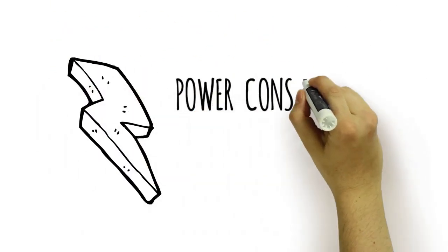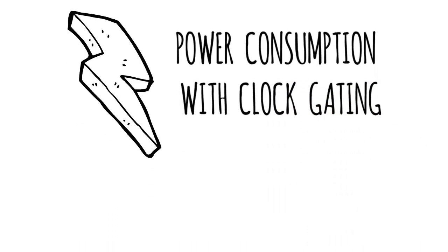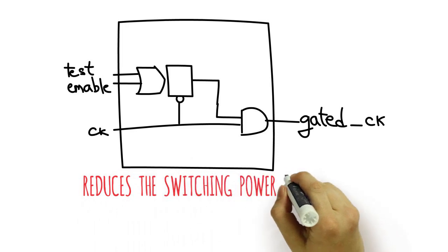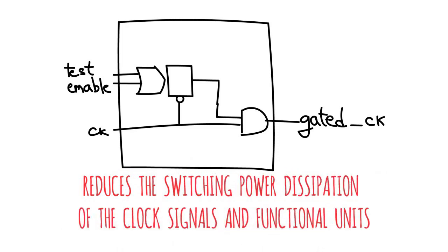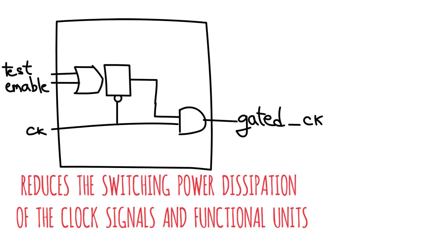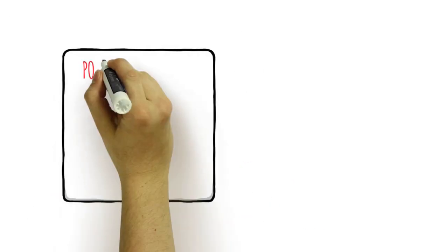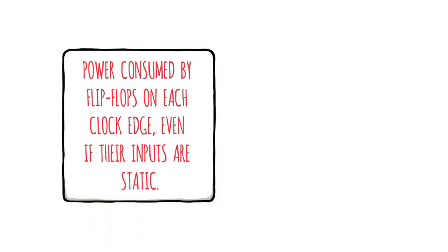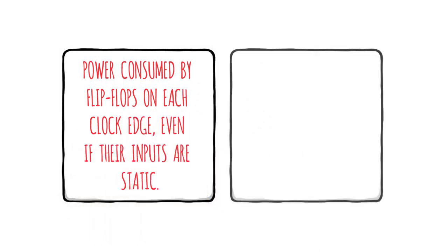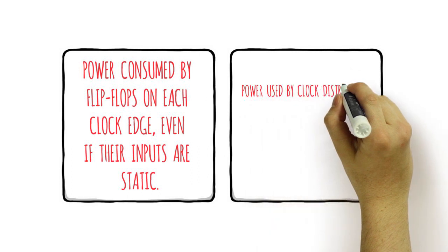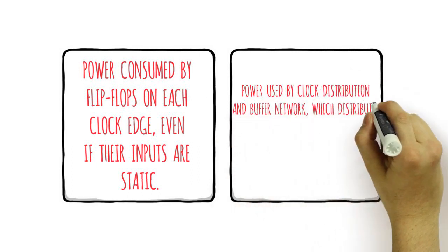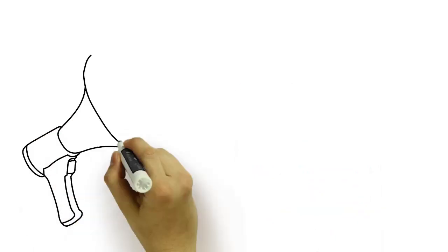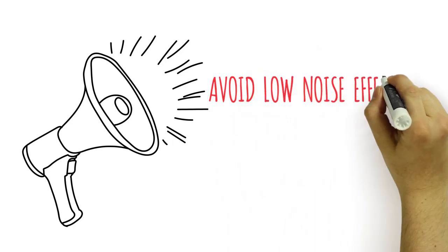Here is how clock tree synthesis helps. Firstly, it reduces power consumption with clock gating. During the CTS step, clock gating is a technique that reduces the switching power dissipation of the clock signals and functional units. It helps in two major components of power dissipation: one, power consumed by flip-flops on each clock edge, even if their inputs are static; and two, power used by the clock distribution and buffer network, which distributes the clock throughout the chip, even in areas that currently do not need it.